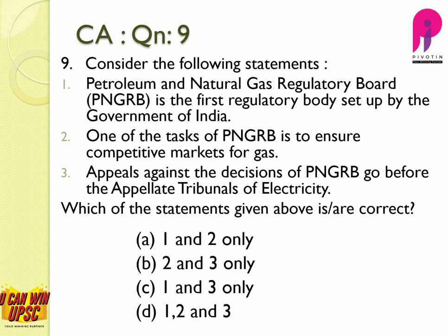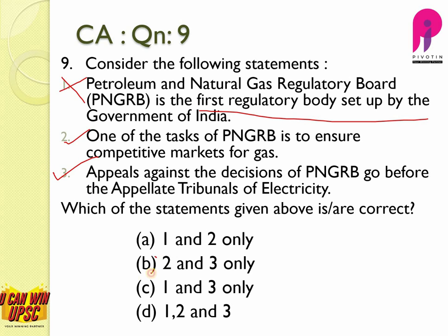Question number 9 is regarding the Petroleum and Natural Gas Regulatory Board (PNGRB). Statement 1: PNGRB is the first regulatory board set up by the Government of India — PNGRB came into existence in 2006, and there were many regulatory bodies existing before that, so statement 1 is obviously wrong. One of the tasks of PNGRB is to ensure competitive markets for gas — yes, correct. Appeals against the decisions of PNGRB go before the Appellate Tribunals for Electricity — this is also correct. The answer is B, statements 2 and 3.